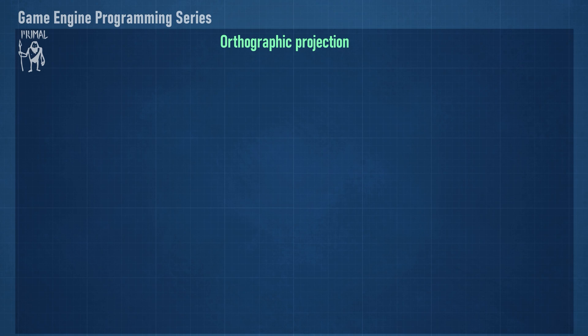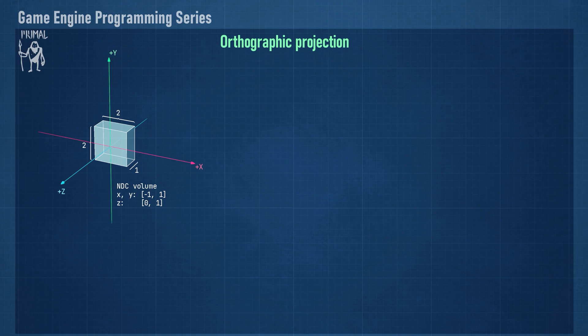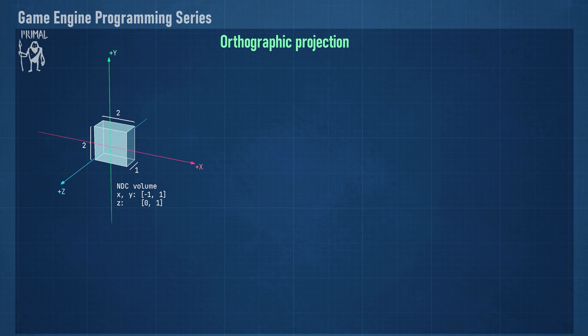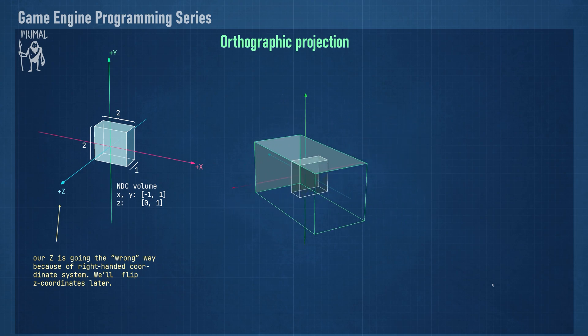Next comes the projection transformation. Strictly speaking, this transformation will take each point from the view space and transform it to the homogeneous clip space. The hardware will further transform these points to the normalized device coordinates. Let's have a look at NDC space — this is the final place where each point in the camera view will end up. It's a box that has a width and height of 2 and a depth of 1. The depth value in the Z direction goes from 0 to 1. In our right-handed coordinate system, we need to account for the direction of the Z axis.